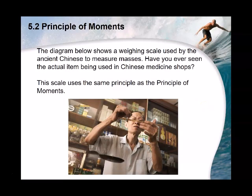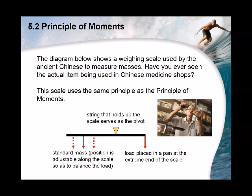The next diagram shows a weighing scale used by ancient Chinese to measure mass — the kind seen in traditional Chinese medicine shops. The string acts as the pivot, with a standard mass on one side and the load on the other. By adjusting the standard mass left and right, you can measure the mass of the product.